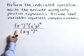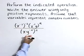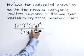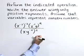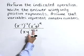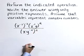Here we have x to the negative 3 raised to the negative 2 power times x to the negative 1 times y, quantity to the second power, all divided by the quantity x times y to the negative 2 raised to the second power.